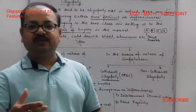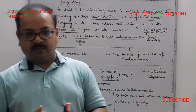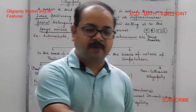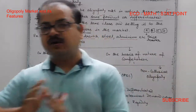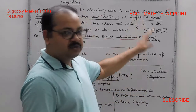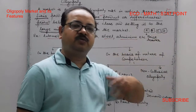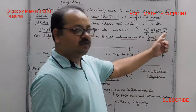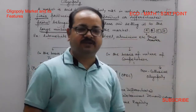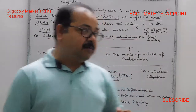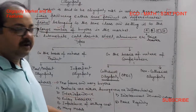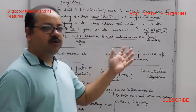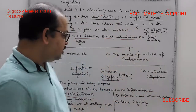Because firms react to each other's decisions, there are no fixed rules in this market. Different types of models are used to explain oligopoly behavior, reflecting the variety of possible competitive situations.